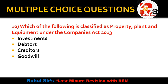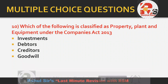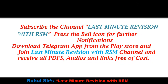Question number 10: Which of the following is classified as property, plant and equipment under the Companies Act 2013 — investments, debtors, creditors, or goodwill? Investments are recorded under non-current investments. Debtors are recorded as trade receivables. Creditors are recorded as trade payables. Goodwill is an intangible asset and is recorded under property, plant and equipment. Previously this was called fixed assets, but it has recently been renamed to property, plant and equipment.